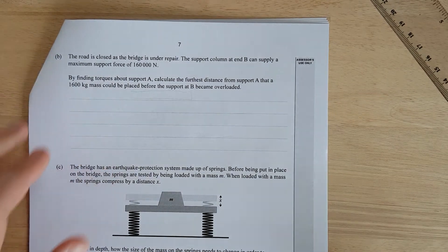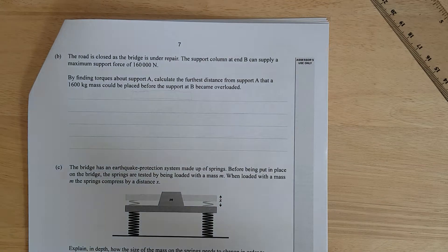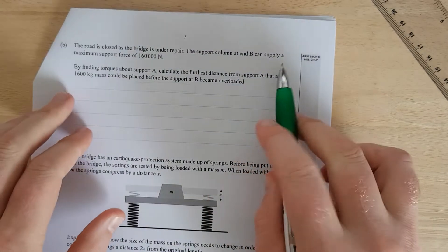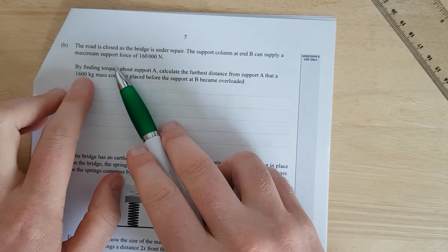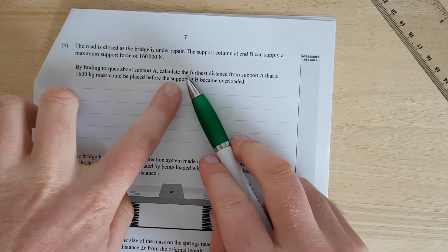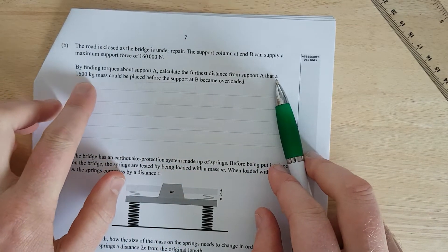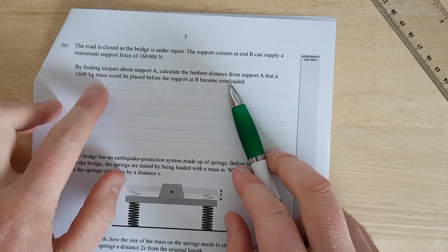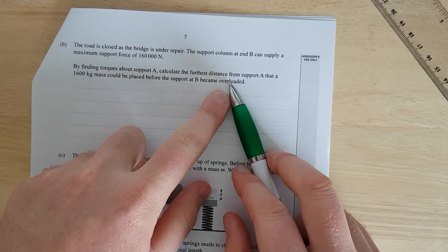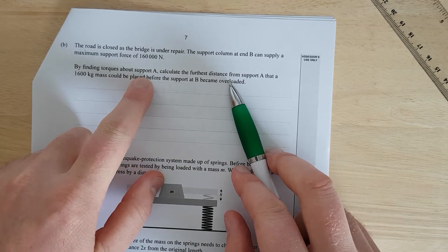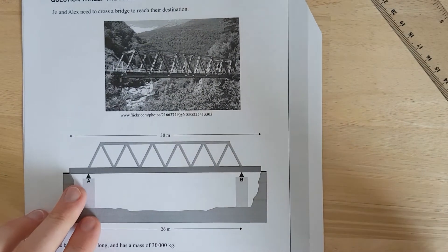The road is closed as the bridge is under repair. The support column at end B can supply a maximum support force of 160,000 newtons. By finding the torques about support A, calculate the furthest distance from support A. So we're going to find the torques around support A.